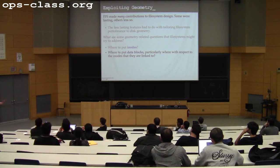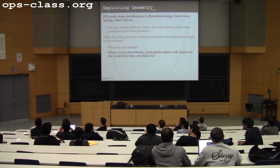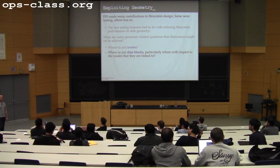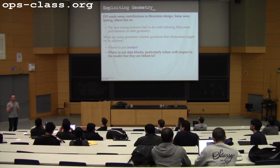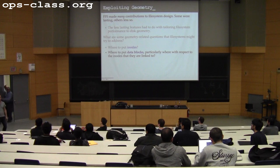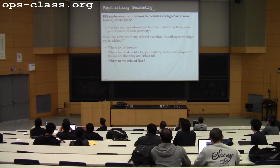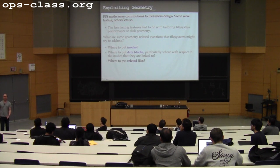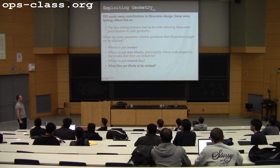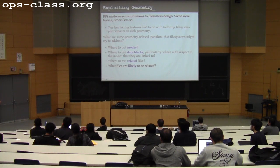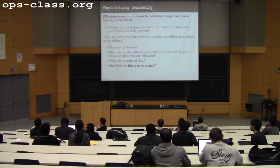The inode is the data structure with metadata about the file. If you can put metadata and file contents as close together as possible, you reduce seeks required when opening and reading a file. Beyond single-file optimizations, you might also want to put all files in a particular directory close to each other, since they're accessed around the same time — looking at temporal patterns of access across multiple files.